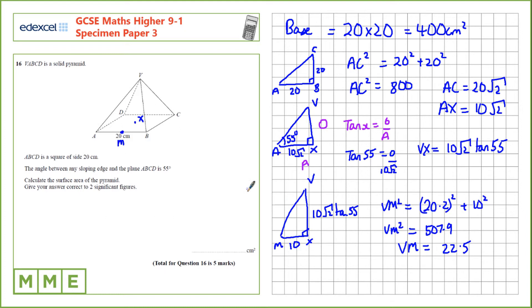The next thing we need to do is find the area of one of these faces. We have the vertical height. So the area of a triangle is half base times height. So that's 22.5 times 20, which is 225.37. We've got four of these. So 225.37 multiplied by four faces. Add on the base, which is 400. It gives us approximately 1,300 centimeters squared to two significant figures.